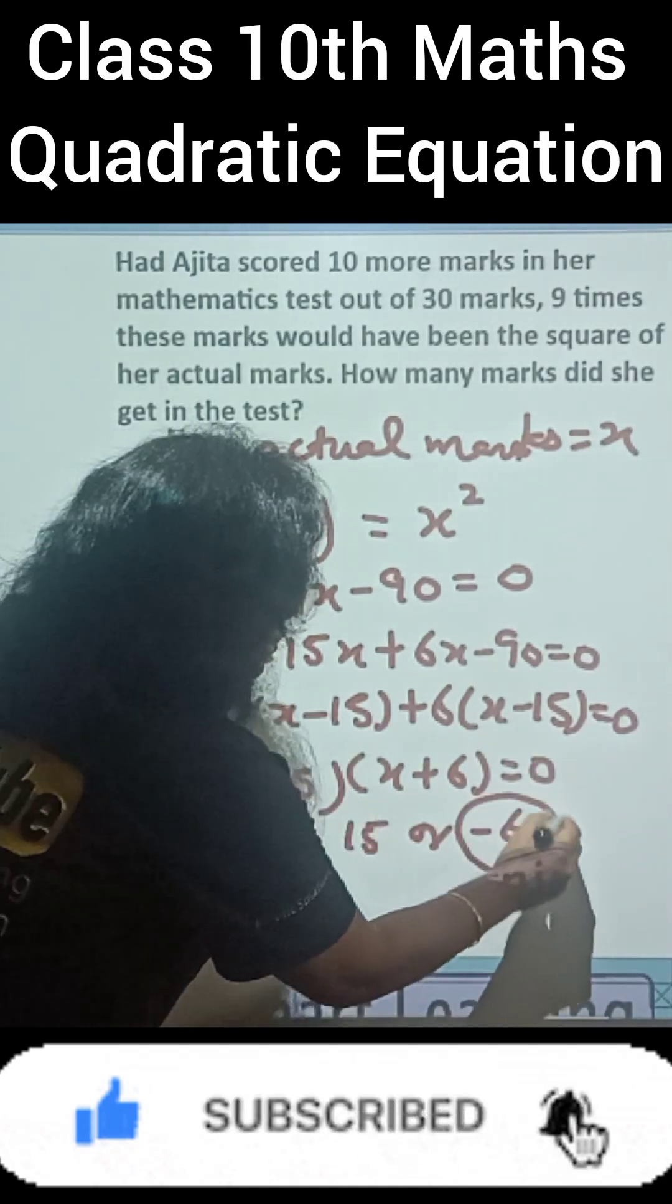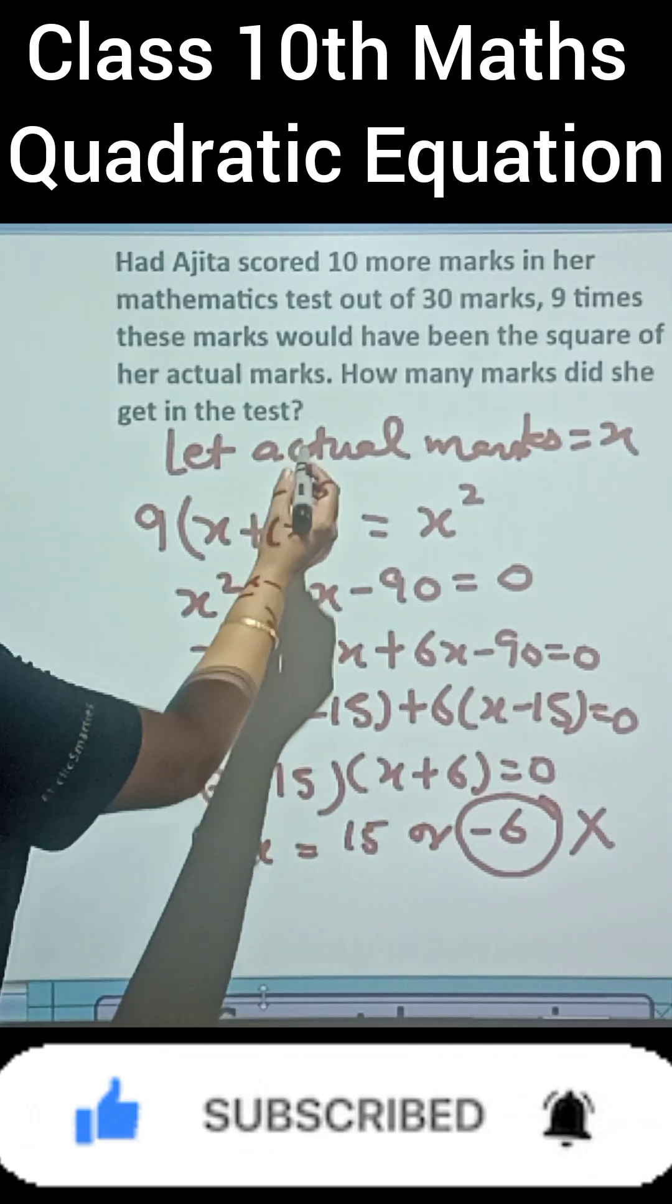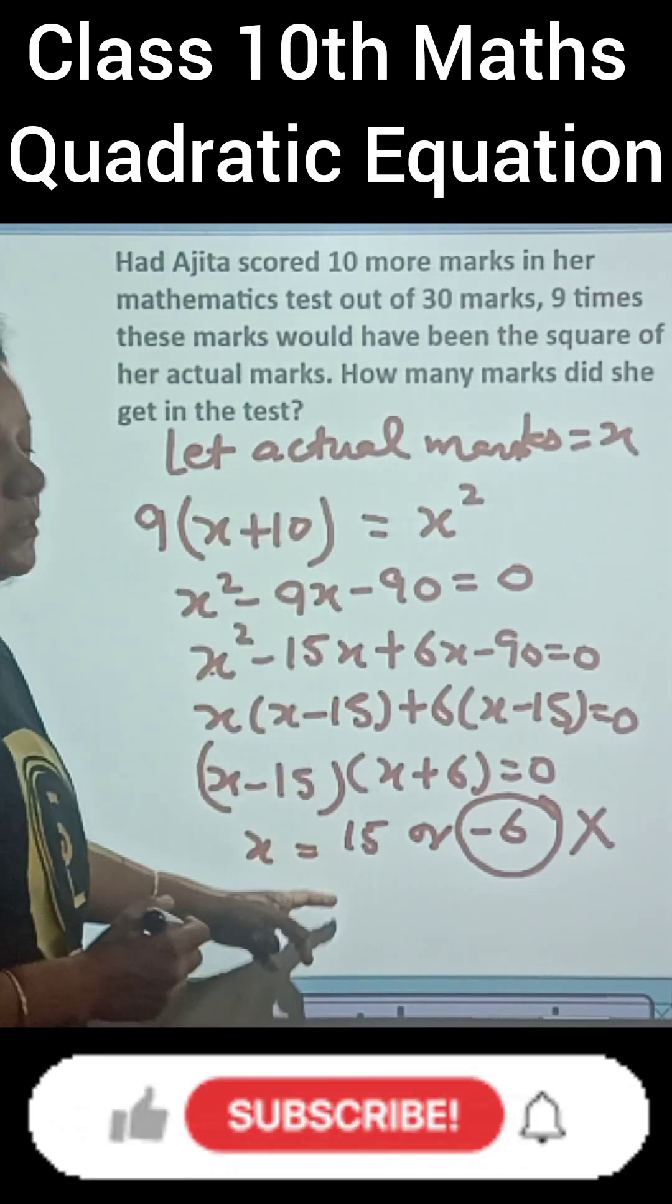So x equals 15 or x equals minus 6. Minus 6 is not possible as marks cannot be negative. So her actual marks is 15.